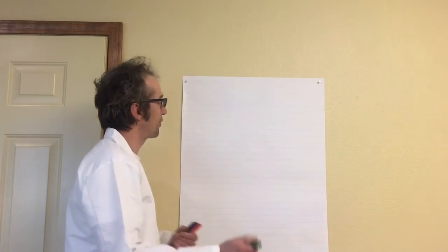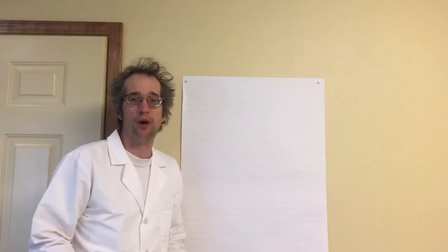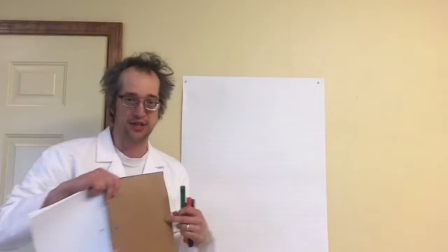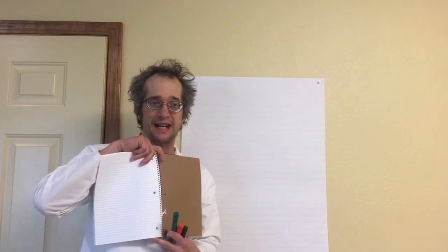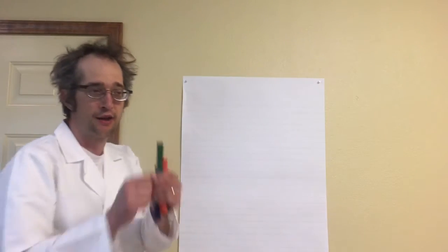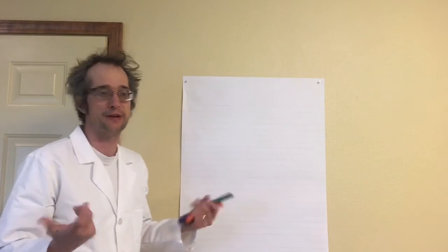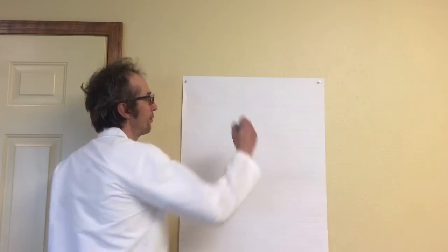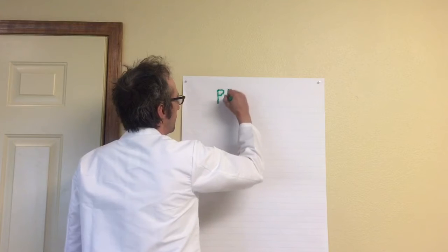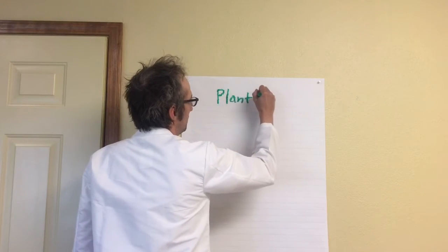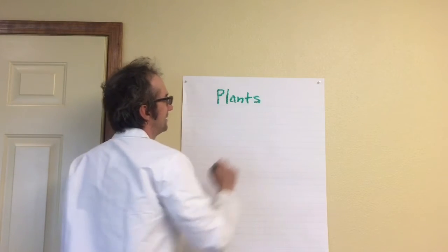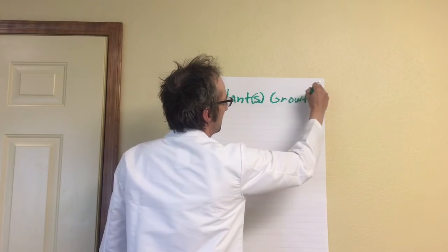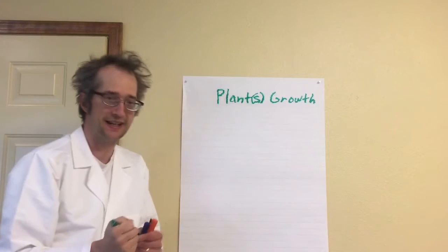We're going to start with your science notebook — hopefully you've created one. It could look something like this, which is a full journal dedicated to it, or the little booklet that I showed you how to make. At the top of your first piece of paper, we're going to put down "Plant Growth" or just "Plants."